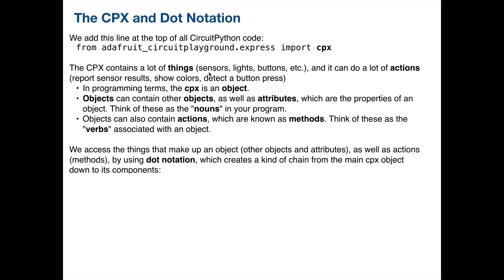The CPX contains lots of different things — it's got sensors, lights, and buttons. It can report sensor results as output, show colors when we input an RGB color value, and detect a button press. Not to load you up with too much programming terminology, but we would refer to the CPX as being an object. And objects can contain other objects — for example, our CPX contains a bunch of those pixels.